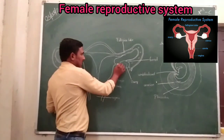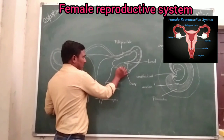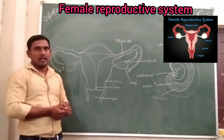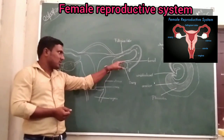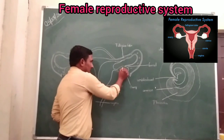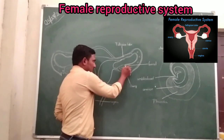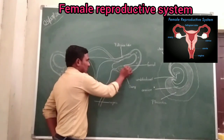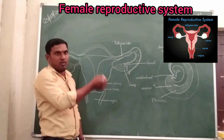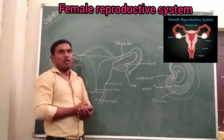The ovary contains small granule-like structures called follicles — Graafian follicles. Graafian follicles are bubble-sized structures present in the ovary. When the Graafian follicles mature, they rupture their walls and release the egg, or ovum. The release of the egg or ovum is called ovulation.